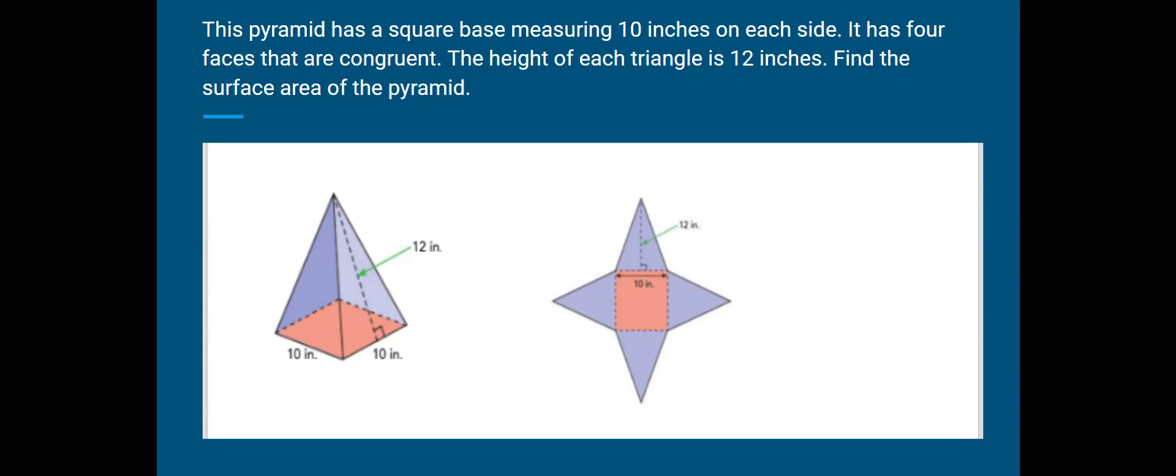All right, now here's your turn to try one on your own. We did one together, and now you're going to try one on your own. This pyramid has a square base measuring 10 inches on each side. It has four faces that are congruent. And congruent basically means same length, same measurements. The height of each triangle is 12 inches. Find the surface area of the pyramid. Let me read this one more time. This pyramid has a square base measuring 10 inches on each side. It has four faces that are exactly the same, congruent. The height of each triangle is 12 inches. Find the surface area of the pyramid.